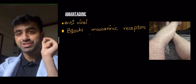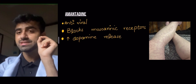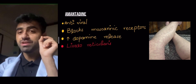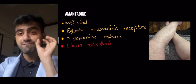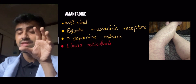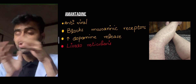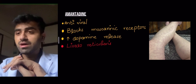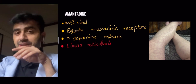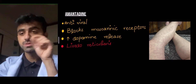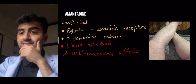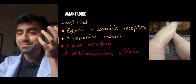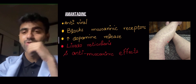Now let's look at amantadine, which is actually an antiviral drug used in Parkinson's. It blocks muscarinic receptors, increases dopamine release, and causes livedo reticularis — a very important and specific side effect you need to remember, due to disruption of the cutaneous blood supply. A picture is included here to help you remember this side effect, as it may appear in an exam. It also has anti-muscarinic effects, as discussed for benztropine.